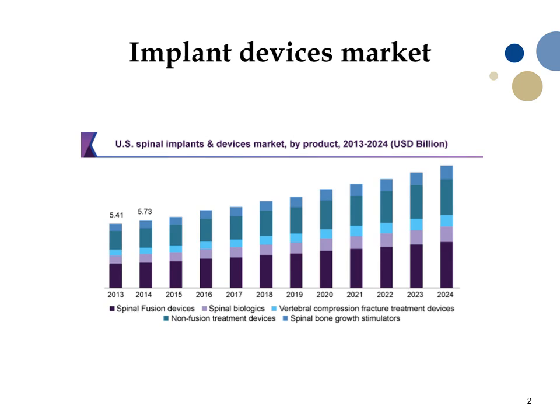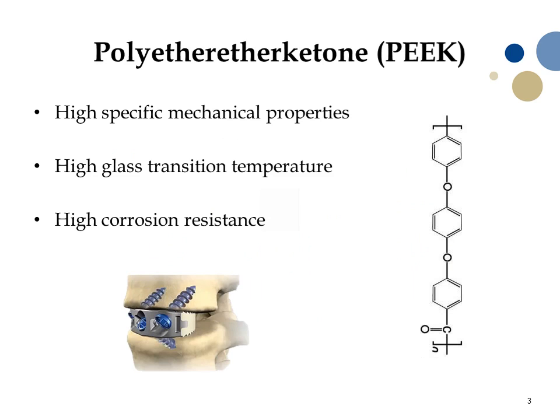Due to the continuous increment in the demand of implant devices, researchers have focused their attention on the development of new biocompatible materials, in particular polymers. Among them, polyether ether ketone (PEEK) has gained wide interest in load-bearing applications, such as spinal cages, due to its high specific mechanical properties, high glass transition temperature, and high corrosion resistance.